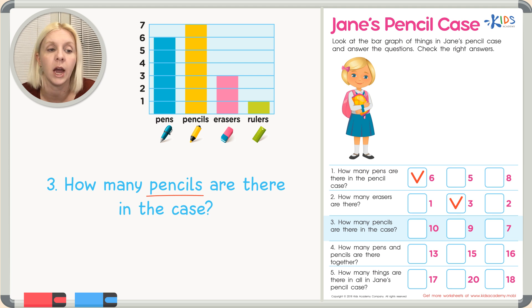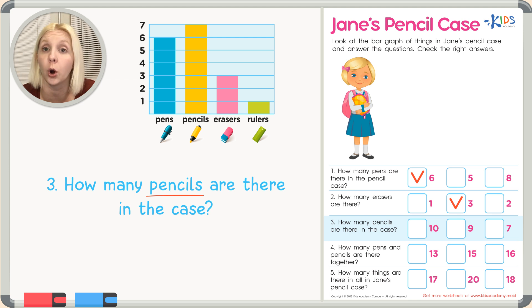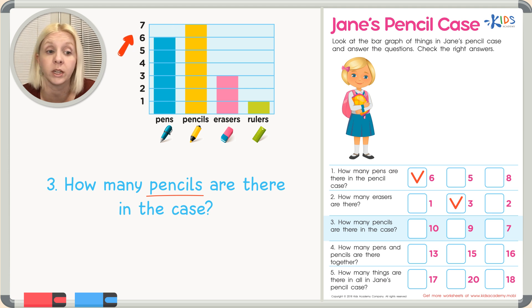The next one says: how many pencils are there in the case? I'll underline that. Let's find pencils on our graph — pens, pencils, there it is. We're not going to count them, we're just going to look at the bar graph. Where does the top of this bar go? It goes all the way up to the number seven, so that's our correct answer.